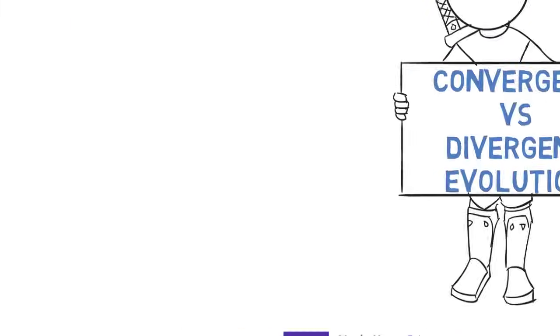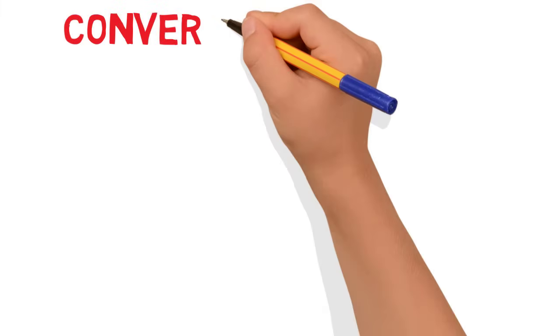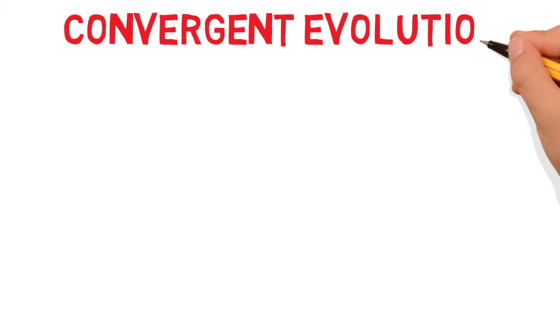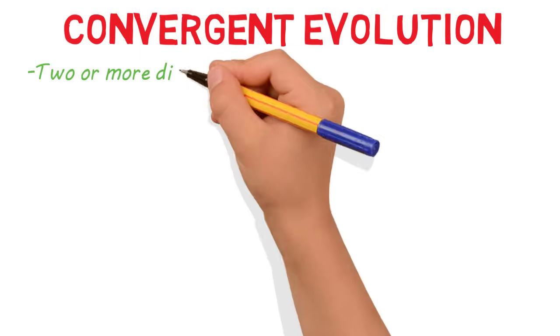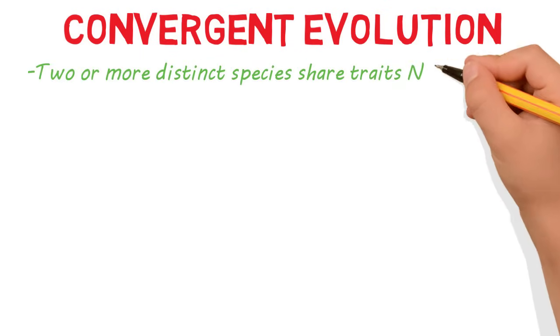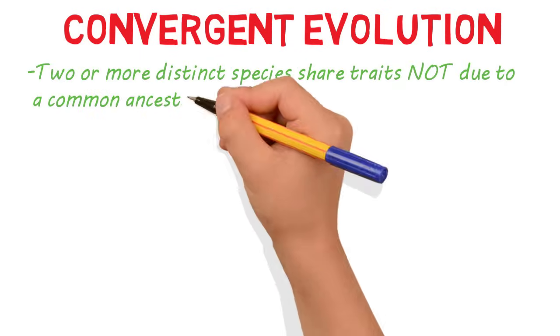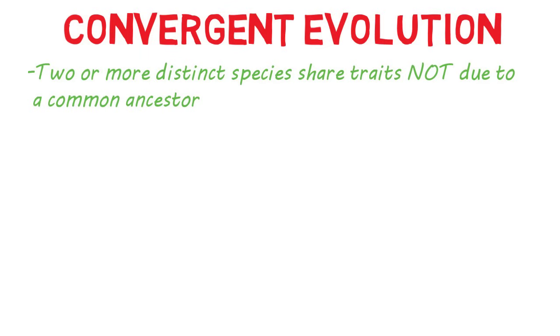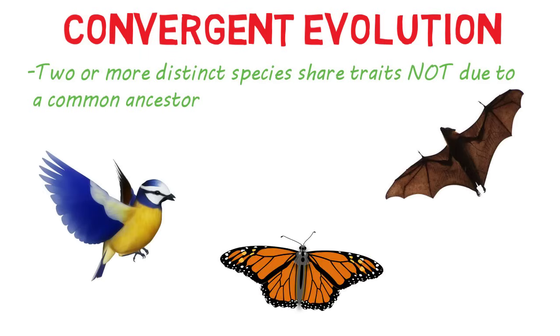Now let's contrast this with convergent evolution. In convergent evolution, two or more distinct species share traits not due to a common ancestor. Let's take birds, bats, and butterflies for example.